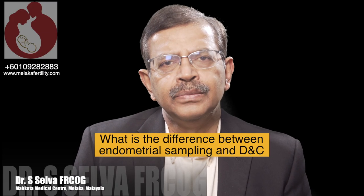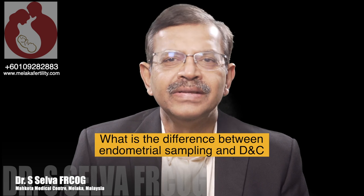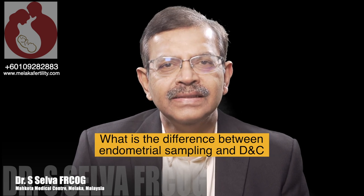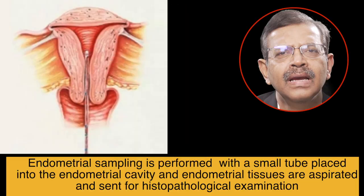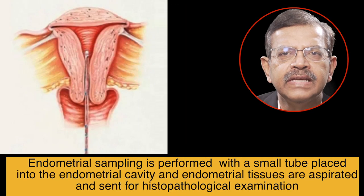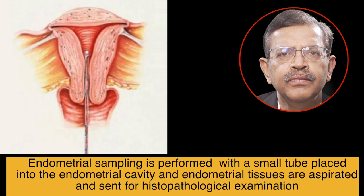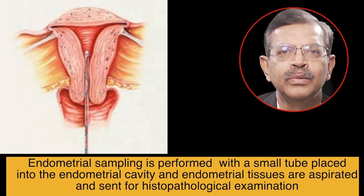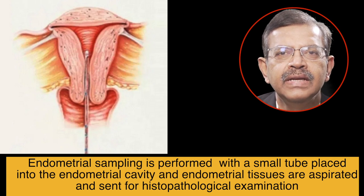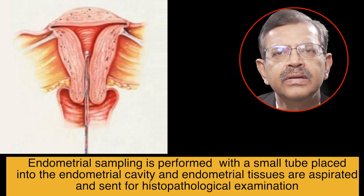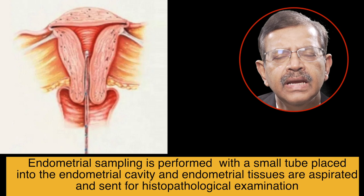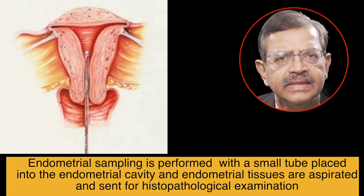What is the difference between endometrial sampling and DNC? Endometrial sampling is performed with a small tube placed into the endometrial cavity, and endometrial tissues are aspirated and sent for histopathological examination.